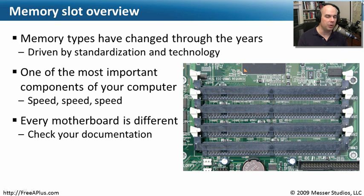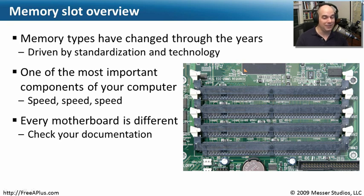So check the documentation of your motherboard. Go online to some of these memory manufacturers — Crucial is a great one. They have a nice wizard you can go through where you enter your model of computer and it tells you exactly the type of memory you need. And if you're not sure exactly what motherboard you have or can't find the documentation, that's a good way to do it.